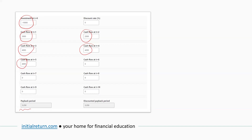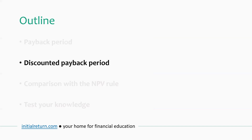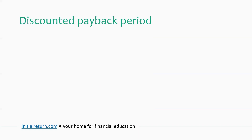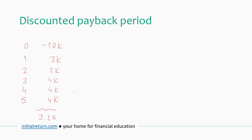Let's now move on to discussing the discounted payback period. One disadvantage of the payback period is that it ignores the time value of money — it tells you how long it takes to get the money back, but it doesn't take into account the present values of the cash flows, and that is a key drawback. So if we remember the cash flows, we started with an outlay of $10,000, then $3,000 in year one, $2,000 in year two, and $4,000 in the remaining three years. On that basis, the payback period is 3.25 years. The discounted payback period is more precise because it makes the same calculation using the present values of these cash flows.